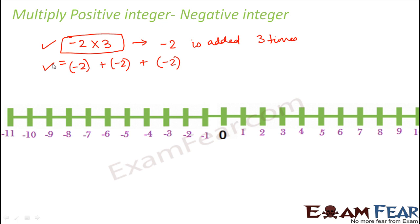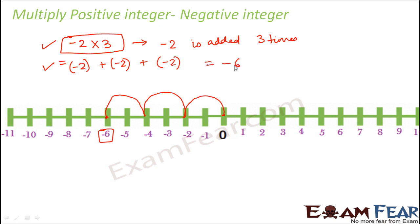If you add minus 2 three times on the number line, you start from 0. From 0 to minus 2 is one time, then to minus 4 is a second time, and then to minus 6 is the third time. So adding minus 2 three times gives minus 6. That is why when you multiply 3 by minus 2 you get minus 6.